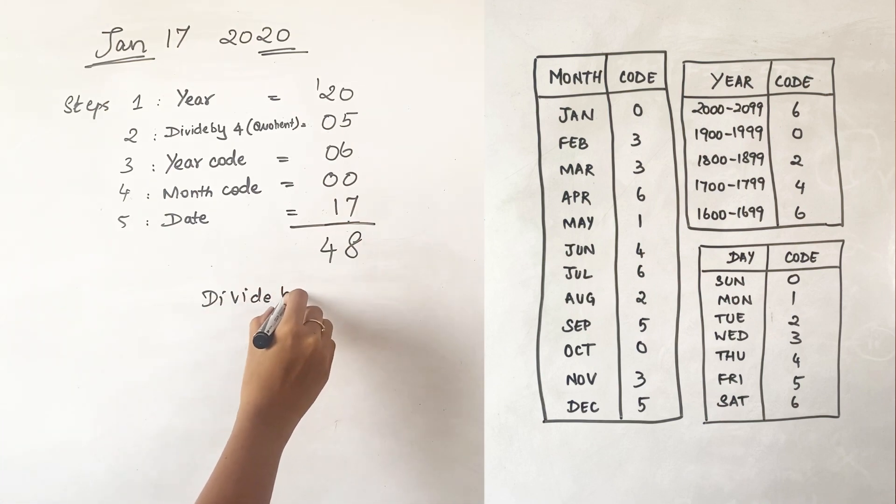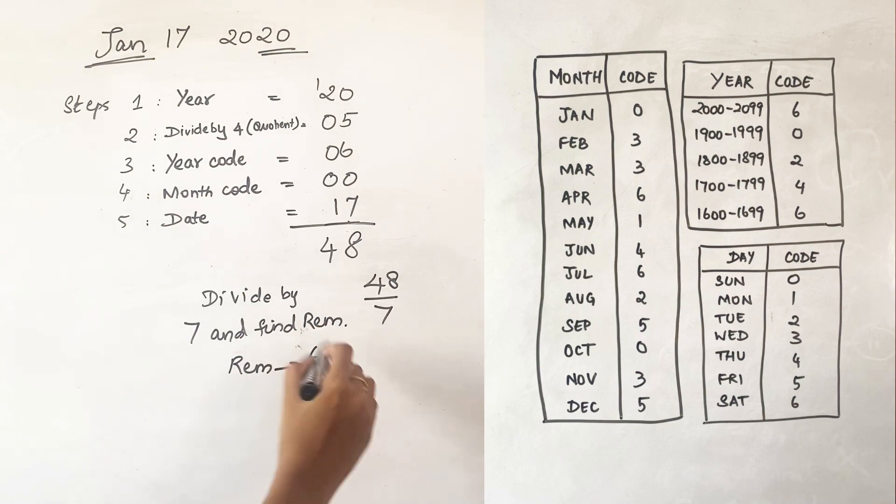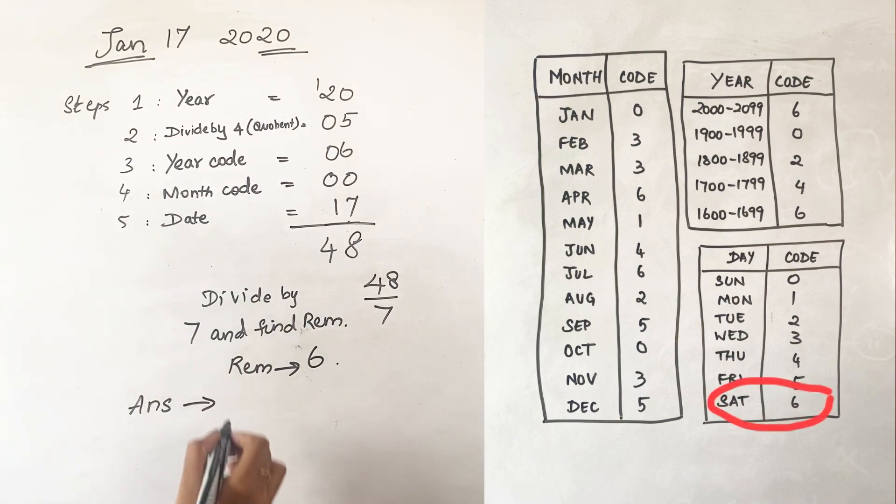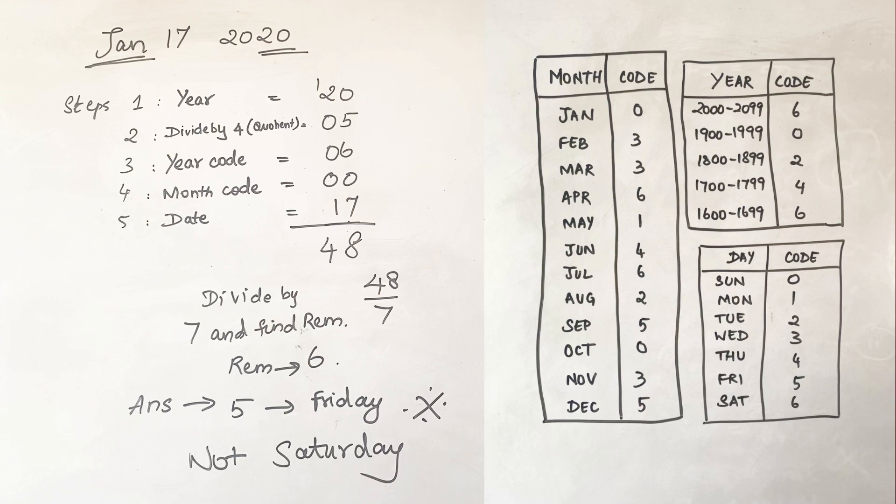Let's divide 48 by 7 and find the remainder. When you divide 48 by 7, the quotient will be 6. 7 sixes are 42, so the remainder will be 6. Now if you see, 6 as per the code is Saturday. But since this is an exception case, we are going to subtract 1 from 6, which is 5, and the answer will be Friday and not Saturday.